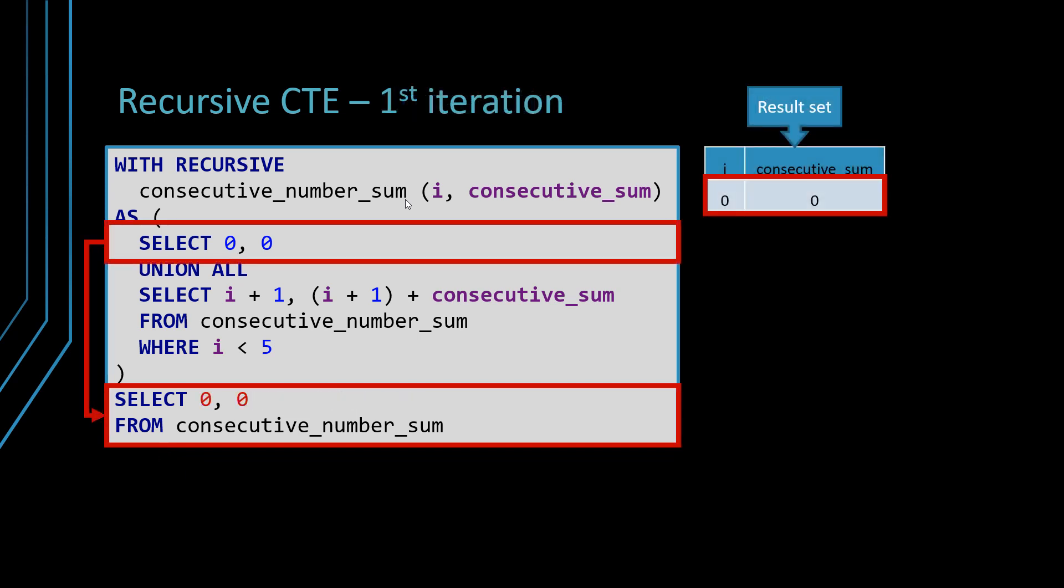So how it works? As I said, the first query selects the first record, which is zero zero. You can see how we keep on building this result set. So this is the first record.